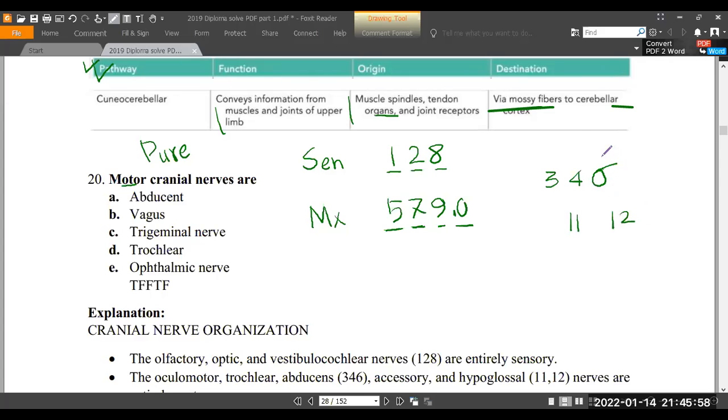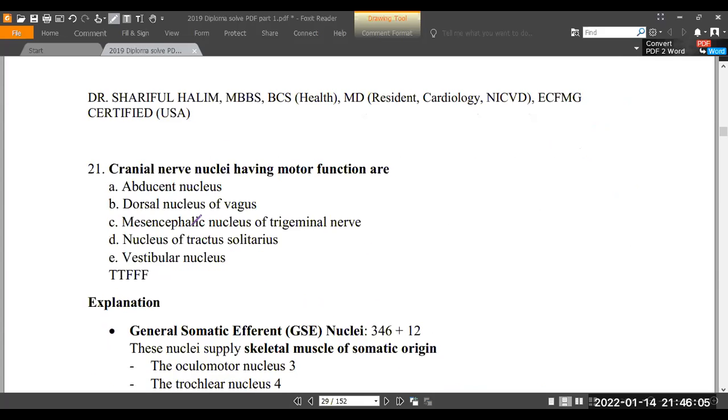Those are the pure motor cranial nerves. These nuclei have motor function, pure motor function. Six has a nucleus - the abducens nucleus. The vagus is mixed, having both motor and sensory components. The motor nucleus is dorsal, so we've got the mixed nuclei.